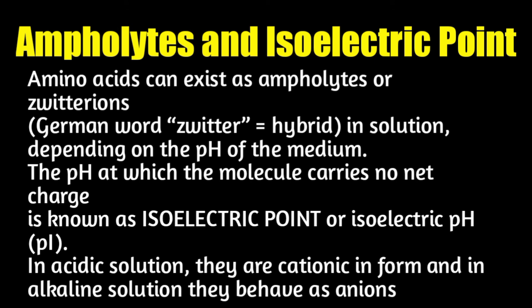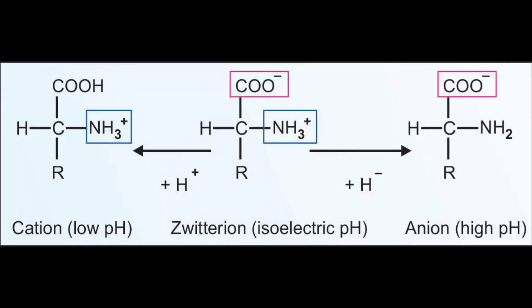Amino acids can exist as ampholytes — they behave differently in acidic, alkaline, and neutral pH. In an acidic solution, an amino acid is positive and shows a cationic form. In an alkaline solution, it is anionic. At neutral physiological pH (7.4), it exists as a zwitterion form, containing both positive and negative charges that cancel out. At that point it is referred to as the isoelectric point.